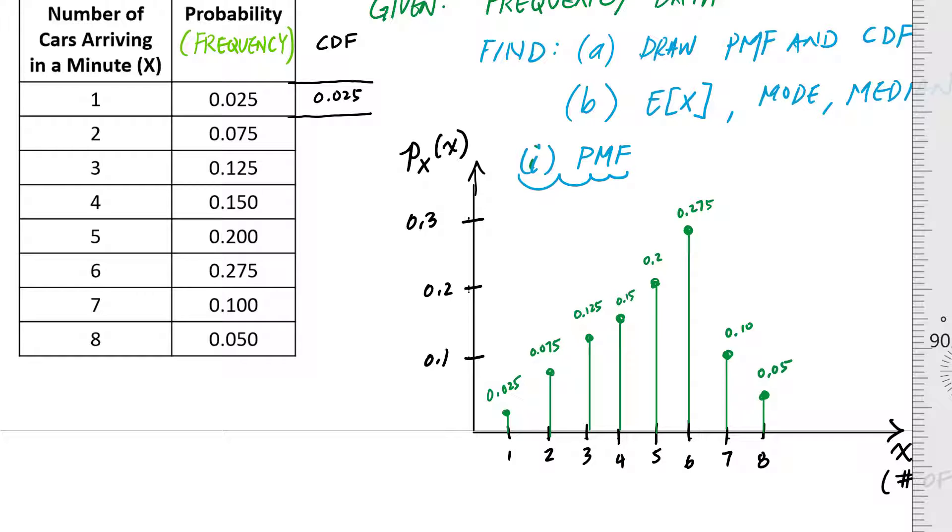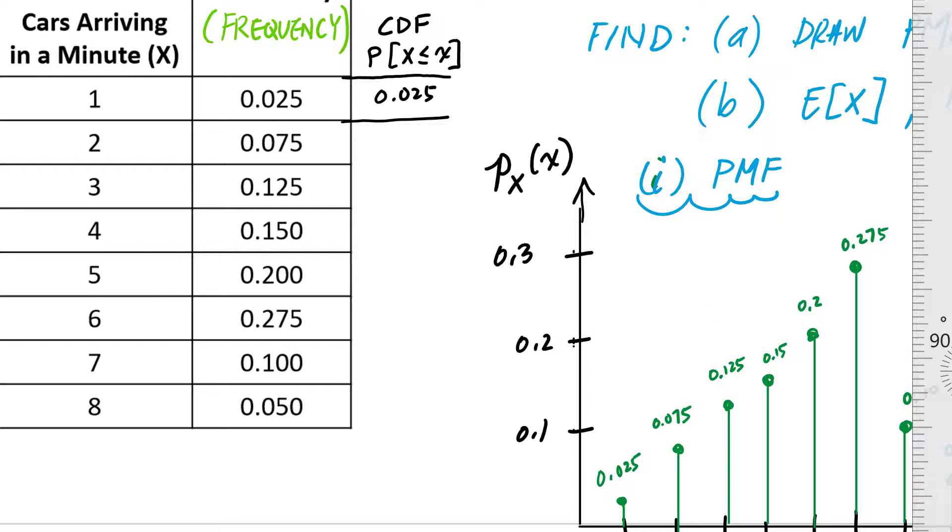This represents a probability of X less than or equal to x. I'm just going to do a running total, so 0.075 plus 0.025 is 0.1, then I'm going to add on this 0.125 to get 0.225.